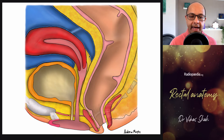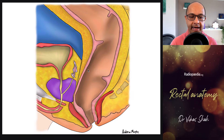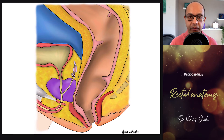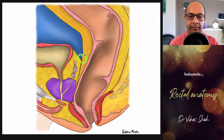We see the valves again. Anteriorly we see the peritoneal reflection, and anterior to the lower-to-middle part of the rectum we have the vagina. In a male patient, anteriorly we see the prostate, but between the anterior wall of the rectum and the back of the prostate is fascia known as Denonvilliers fascia. There is very little fat in this space, and then we have the seminal vesicles and the peritoneal reflection.